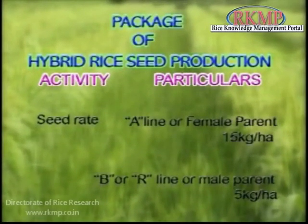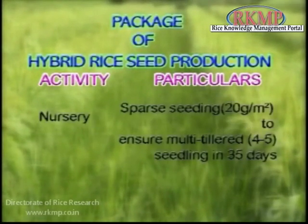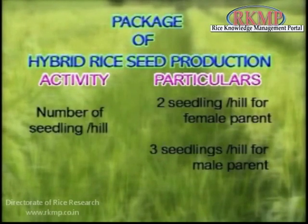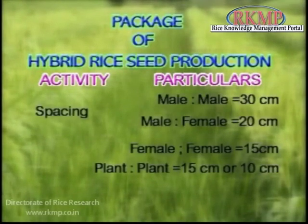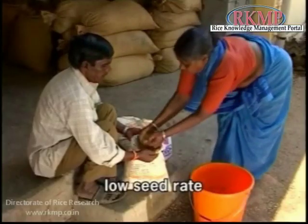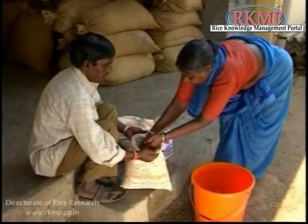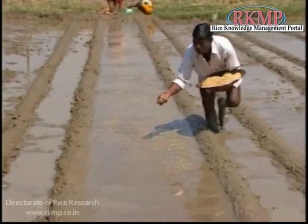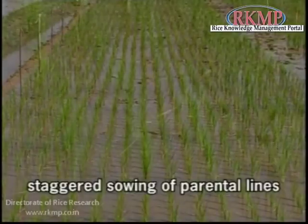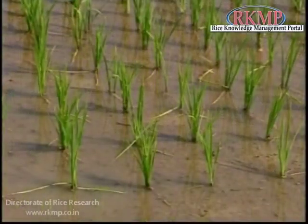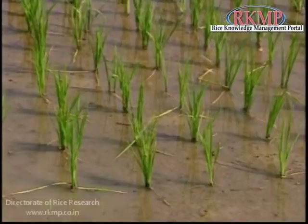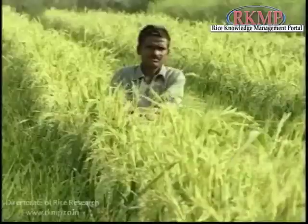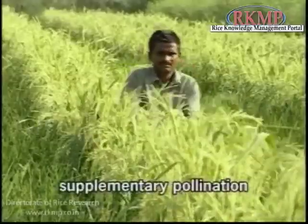A package has been developed for successful hybrid rice seed production. The main features of this package are the low seed rate, sparse sowing of seed, staggered sowing of parental lines, gibberellic acid application, and supplementary pollination.